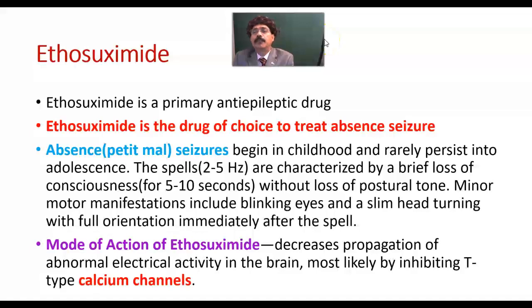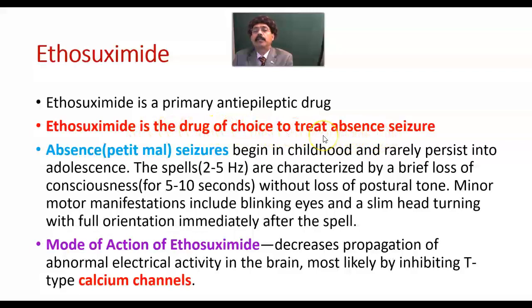Hello, my name is Dr. Diwan S. Raja. Today I will discuss the pharmacology of ethosuximide. Ethosuximide is a primary anti-epileptic drug and is the drug of choice to treat absence seizures. We have other drugs for absence seizures, like valproic acid, but ethosuximide has a better outcome than valproic acid in the management of absence seizures.